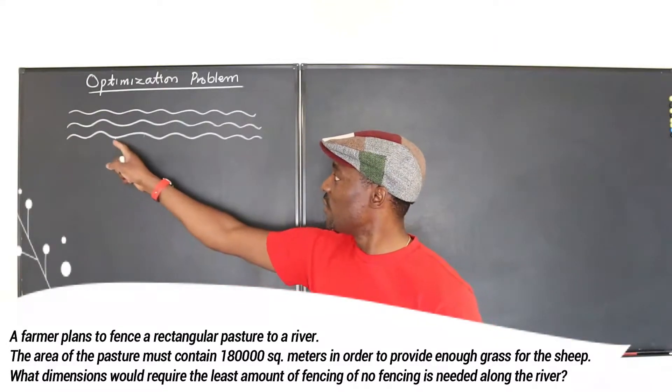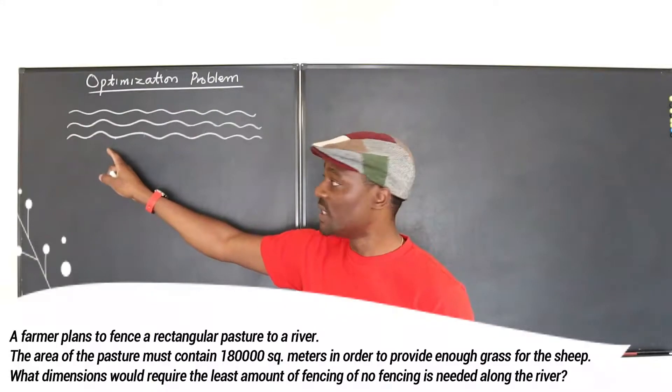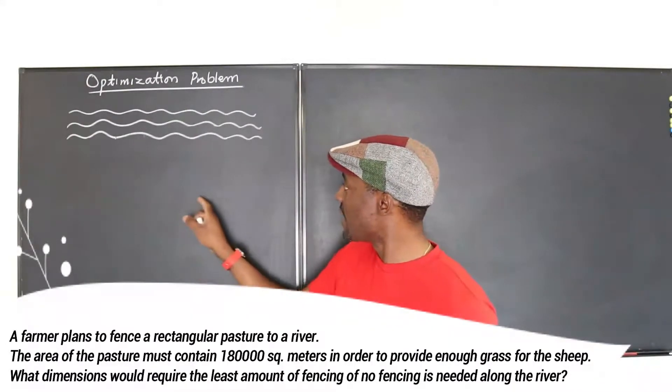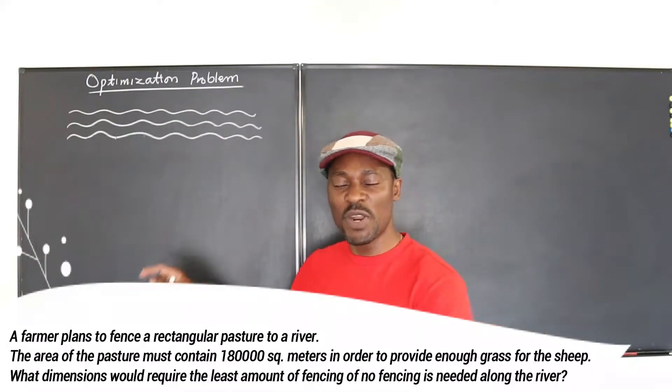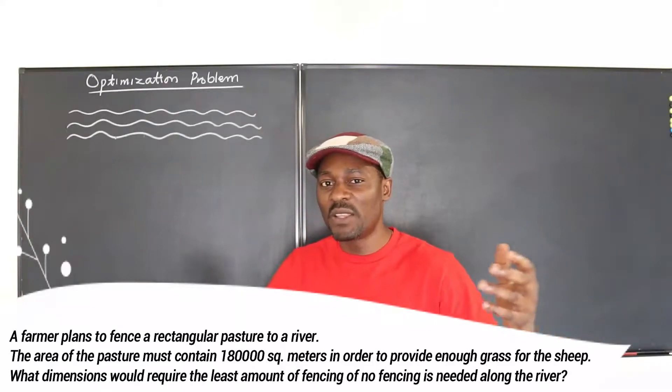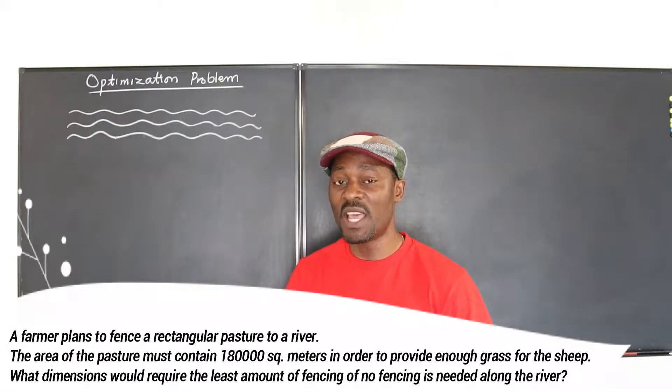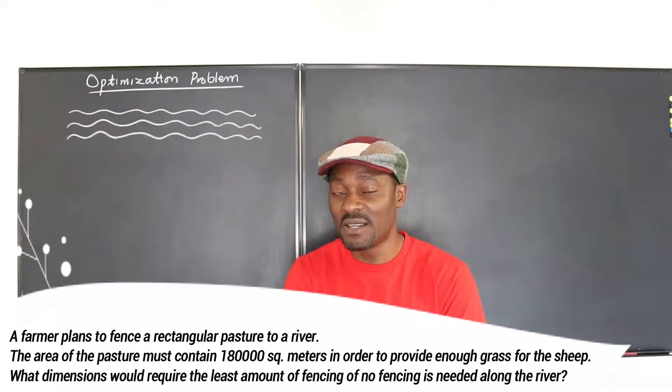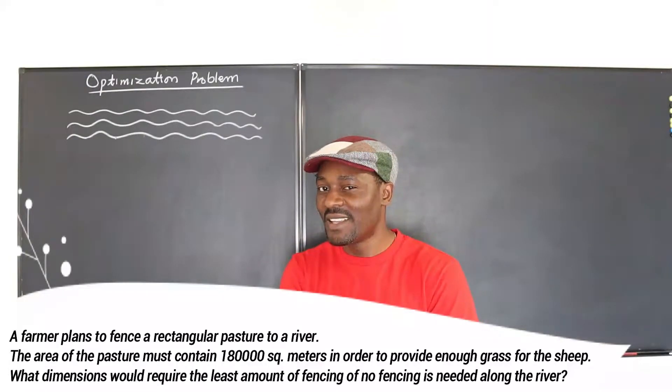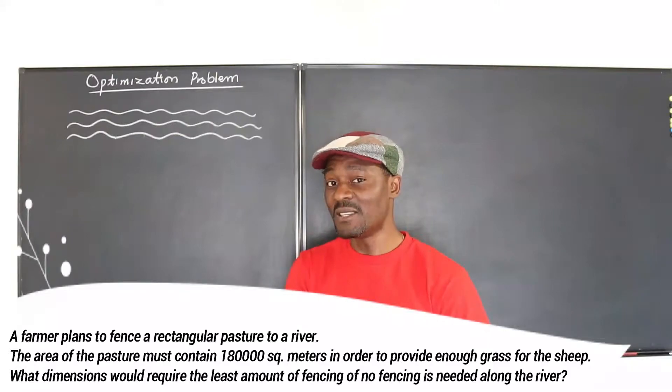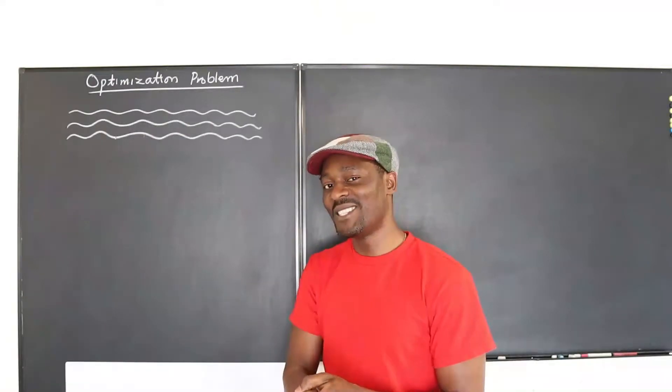You can see that you don't need a fence along the river, you just need a fence along this side and this side and this side. So let's create a rectangle and then see what the dimensions will be that will provide 180,000 square meters, yet the farmer will be spending the least amount of money.